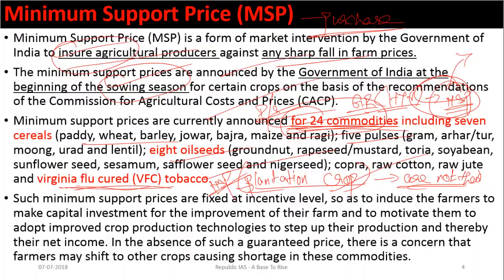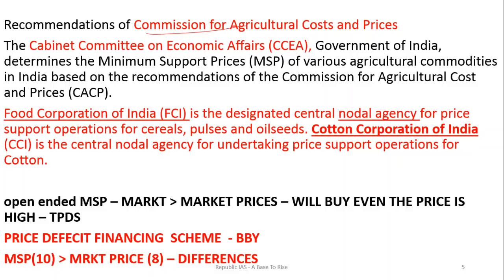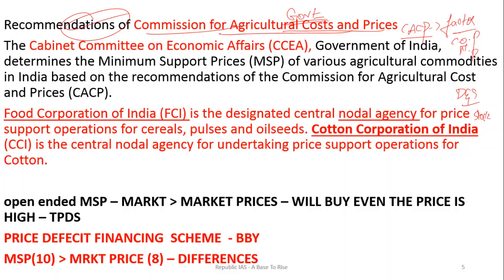How is MSP decided? The Commission for Agriculture Cost and Price (CACP) recommends the MSP to the government. CACP takes many factors into consideration — cost of production, market prices, demand and supply, government stocks, and how much procurement should be done. Based on these factors it gives a recommendation, and it is the Cabinet Committee on Economic Affairs that ultimately determines and announces the MSP.